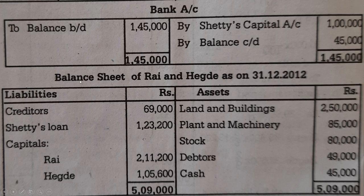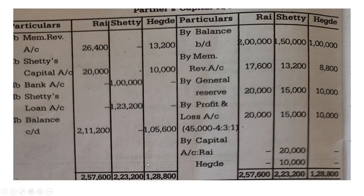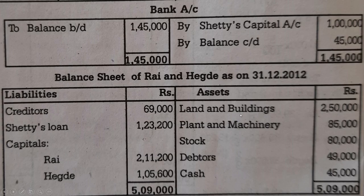In the balance sheet of Rai and Egde on 31st March 2012: liabilities include creditors Rs. 69,000, Shetty's loan account Rs. 1,23,200, capital accounts Rai Rs. 2,11,200 and Egde Rs. 1,05,600. Assets: land and building Rs. 2,50,000, plant and machinery Rs. 85,000, stock Rs. 80,000, debtors Rs. 49,000, cash Rs. 45,000 — total Rs. 5,09,000. That completes how to prepare a memorandum revaluation account, partners' capital account, bank account, and balance sheet of a partnership firm in the event of retirement of a partner. Thank you for watching.